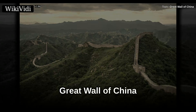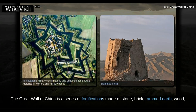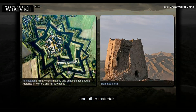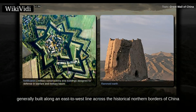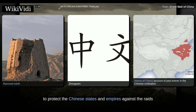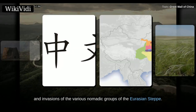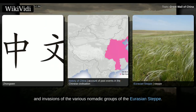The Great Wall of China is a series of fortifications made of stone, brick, rammed earth, wood, and other materials, generally built along an east-to-west line across the historical northern borders of China, to protect the Chinese states and empires against the raids and invasions of the various nomadic groups of the Eurasian Steppe.